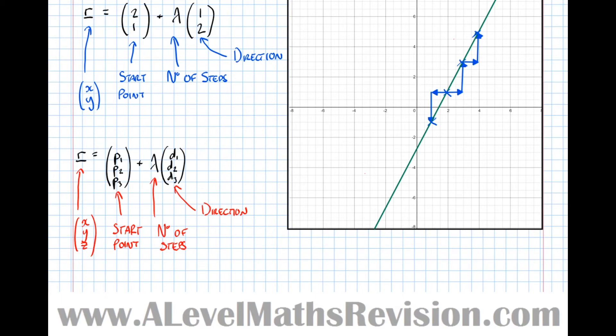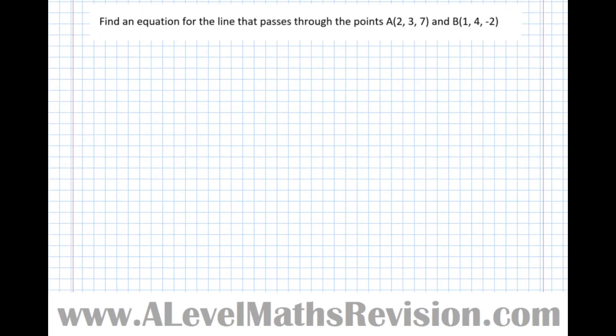So now let's have a look at a couple of example questions that could be given on this topic. So this question says, find an equation for the line that passes through the points A, which is (2,3,7), and the point B, which is (1,4,-2). So let's convert those into vectors. So we've got A, which is (2,3,7), and we've got B, which is (1,4,-2).